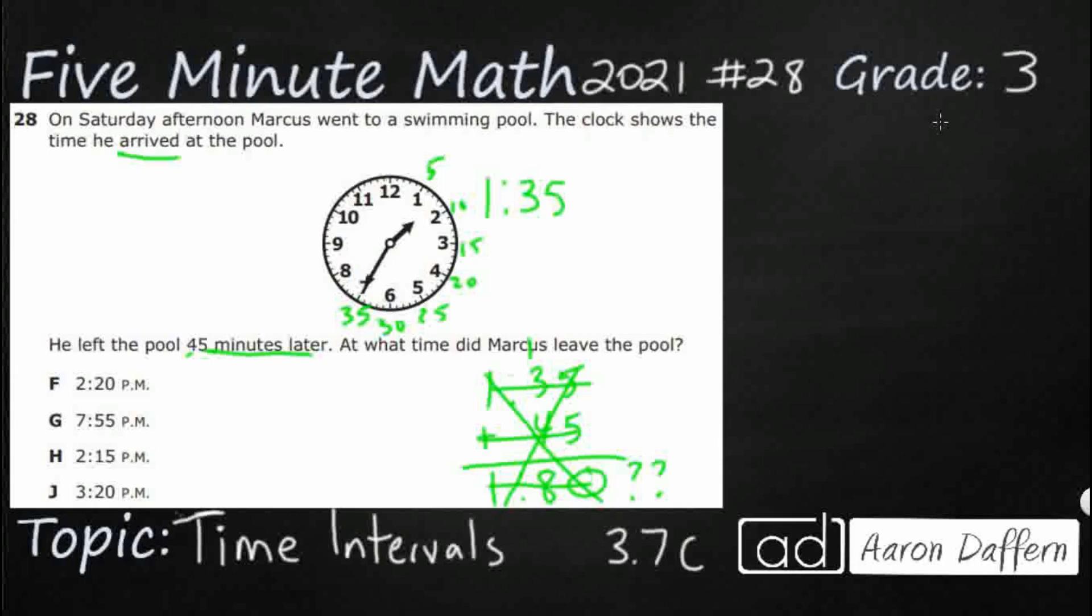There's two different ways we can do it. One is we can use like a timeline. So we're going to set up a timeline right here. We're going to start with 1:35. And what we're going to do is we are going to take jumps, five minute jumps or 10 minute jumps until we get to the next hour.